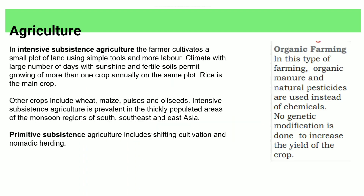Intensive subsistence farming uses a small area of land with more labour. The climate has a large number of sunshine days and good fertility, allowing many crops to be produced annually — rice, wheat, maize, oilseeds. Intensive subsistence farming is found in thickly populated areas of South and Southeast Asia. Primitive subsistence, which involves shifting cultivation, is practiced in areas with limited resources.